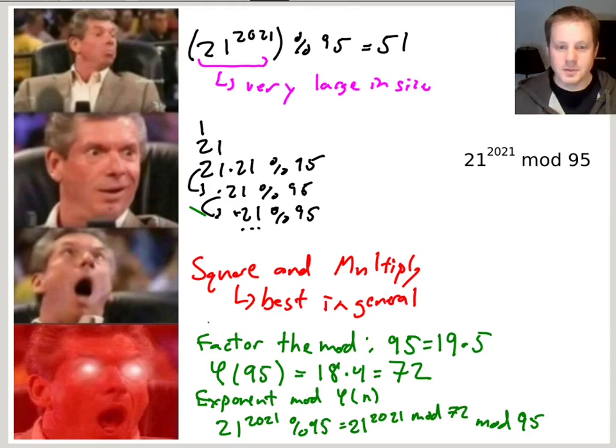So what is the moral of this story? In general, the best algorithm is square and multiply. Sometimes we can even do a little bit better if we can compute the Totient of the modulus, then apply that mod in the exponent. Because we know that these numbers are repeating at that rate, and that allows us to do the very fastest way of doing this computation.